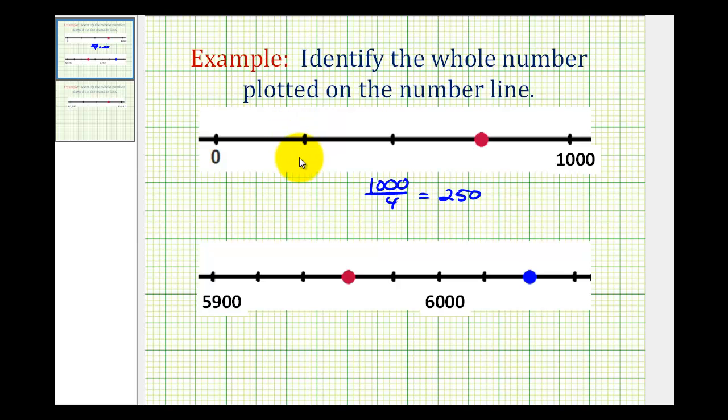So here we'd have 250, here we'd have 500, here we'd have 750, and then 1,000. So for this example, this point represents the whole number 750 on the number line. Looking at the second example,